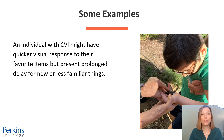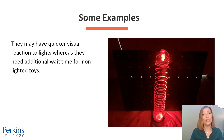An individual with CVI might have quicker visual response to their favorite items, but present prolonged delays for new or less familiar items. On this slide, we have a photo of a young boy holding a baby turtle. Some may have quicker visual reaction to lights or lighted objects, whereas they need additional wait time for non-lighted toys.